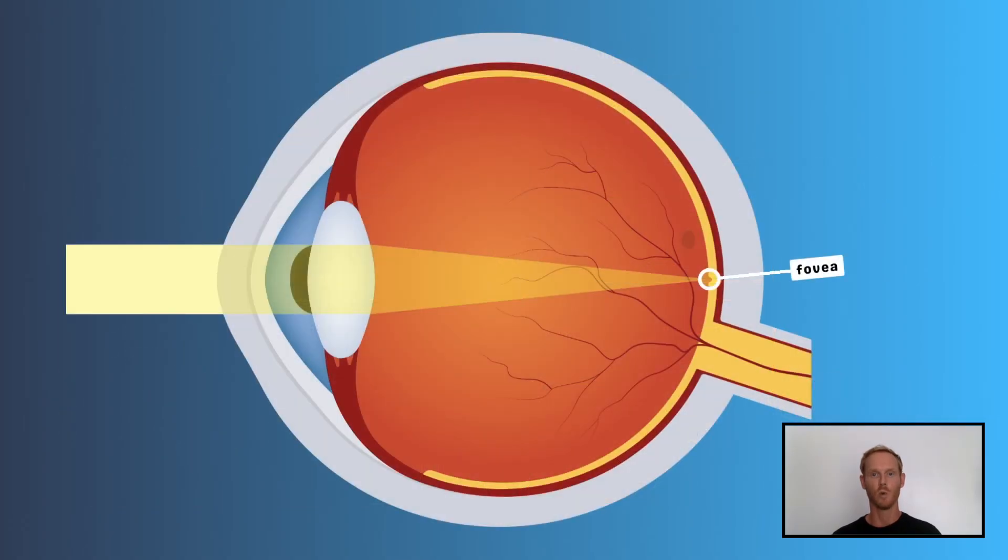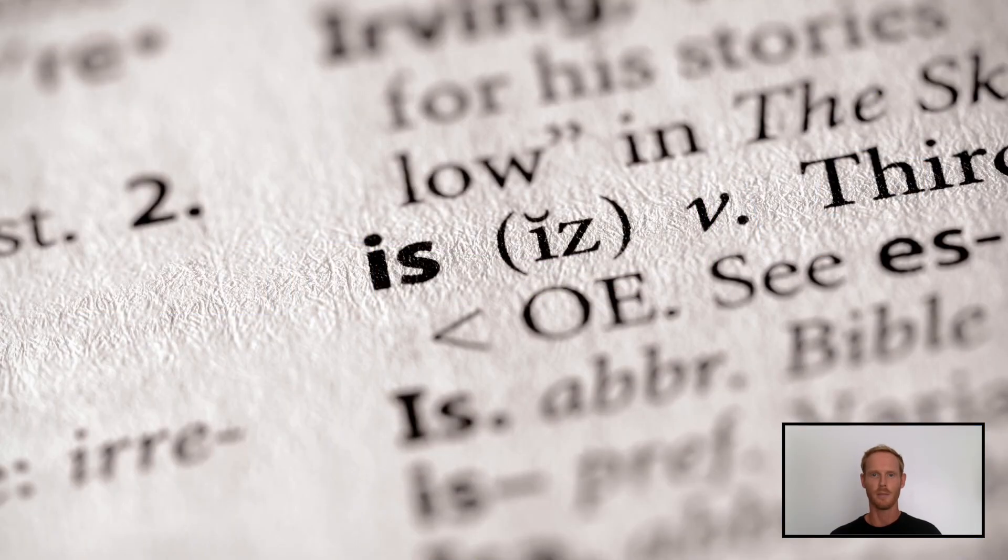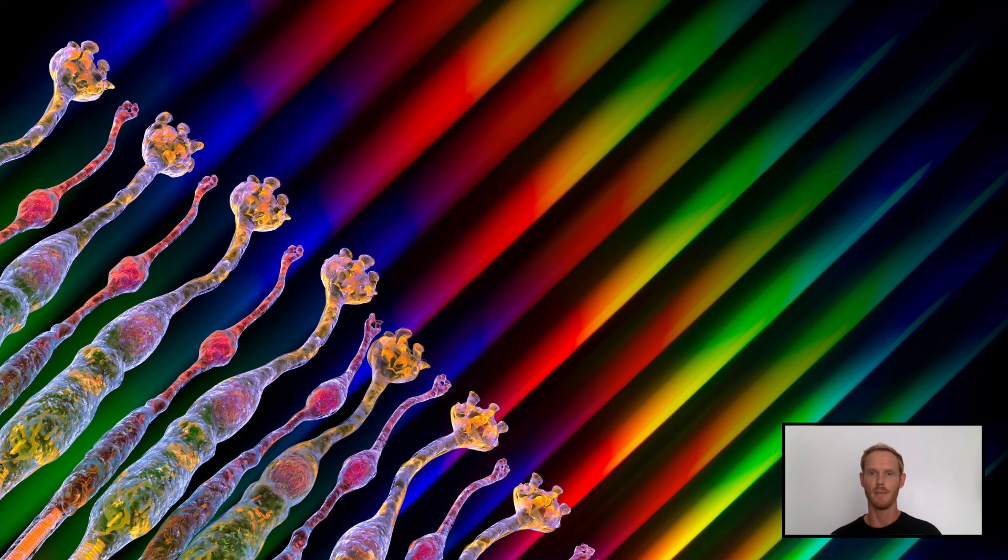The fovea is a small depression at the centre of the retina that's responsible for central vision. It's the point at which visual acuity, or the ability to identify detail and colour, is at its highest. When you study something closely, like a single letter of a word, you're making its image fall on the fovea. The high concentration of cone cells there means that you see the letter in fine detail.